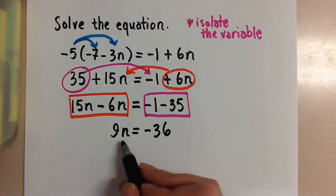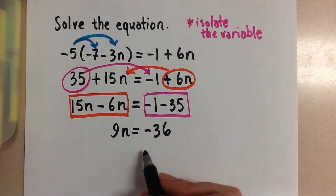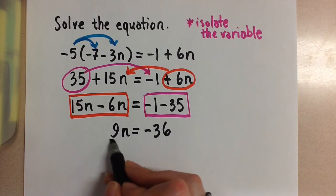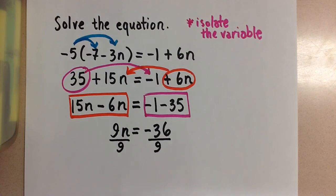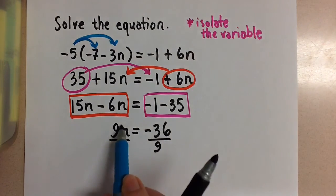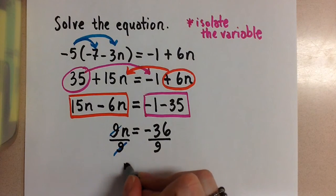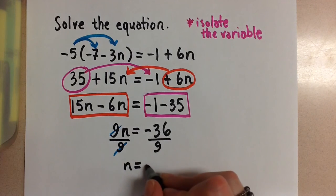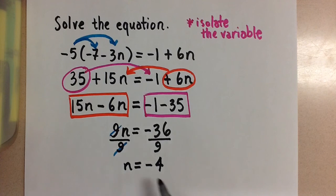Now we have one step left. We still have 9 times n on the left hand side and we want to get n by itself. The opposite of times 9 is divided by 9, so we're going to divide by 9 on both sides of the equation. This cancels out the 9, and we're left with n equals negative 36 divided by 9, which is negative 4. So the answer is n equals negative 4.